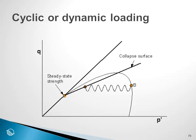The beauty of this idea of a collapsed surface is that it gives us a framework to also interpret dynamic loading. If we assume we are sitting at a particular Q-P' location in Q-P' space and then begin to apply some cyclic loading, the cyclic loading produces some excess pore pressures, and when the stress path reaches the collapsed surface, we have a sudden loss in strength down to the steady state strength. So now we have a framework for interpreting response under both static and dynamic loading within the same framework.